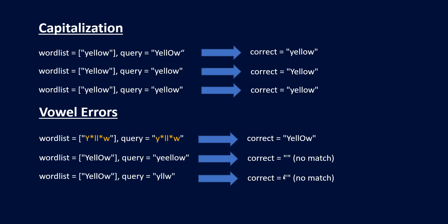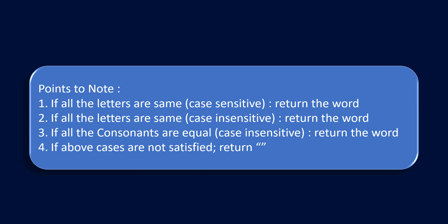From the question we note these key points: first, if all the letters are the same — exact match, case sensitive — we return the word itself. Second, if all letters are the same but in a case-insensitive way, we return the word from the word list. Third, if all consonants are equal and the vowels are substituted with some other vowel — not added, not removed — we return the word from the word list. If none of these cases are satisfied, there is no match and we return a blank string.